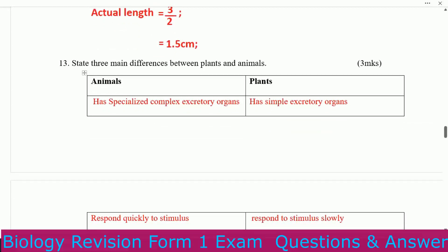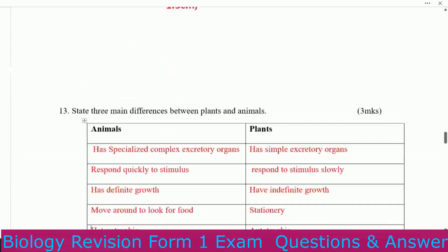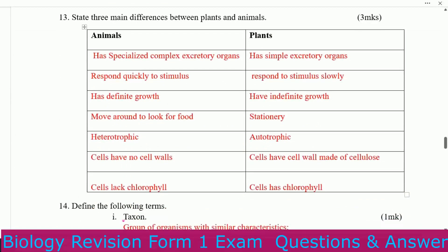State 3 main differences between plants and animals. We have a table with animals on one side and plants on the other. Animals have specialized complex excretory organs; plants have simple excretory organs. Animals respond quickly to stimulus; plants respond slowly. Animals have definite growth; plants have indefinite growth. Animals move around to look for food; plants are stationary. Animals are heterotrophic.